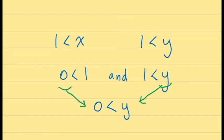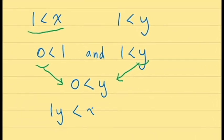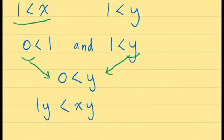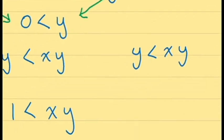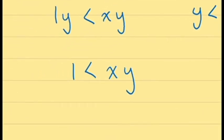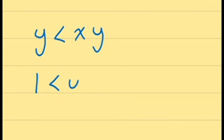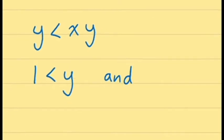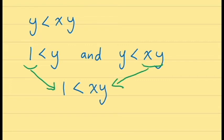If we multiply the inequality 1 is less than X on both sides by Y, we get the inequality Y is less than XY. This is not quite what we're looking for — we want 1 is less than XY. But notice we also have the inequality 1 is less than Y. So with 1 is less than Y and Y is less than XY, we can appeal to the transitivity axiom O2 to conclude that 1 is less than XY, which is the inequality we're looking for.